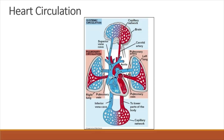The right side of the heart receives deoxygenated blood from body tissues and pumps the blood into the pulmonary circulation. The left side of the heart receives oxygenated blood from the lungs and pumps the blood to the systemic circulation.